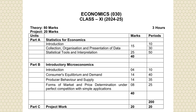The economics syllabus is divided into two parts: Part A — Statistics for Economics, and Part B — Introductory Microeconomics. Both parts carry 40 marks each. You are also supposed to do a project work which will be provided to you by your institution.